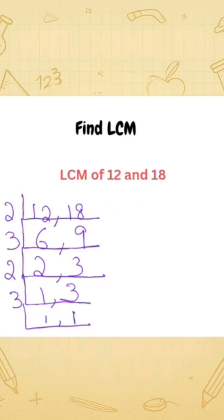This gives us the LCM. The LCM is two times three times two times three, which equals 36.